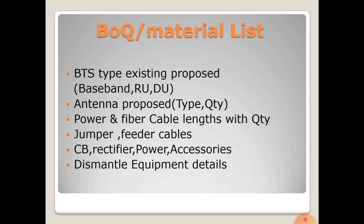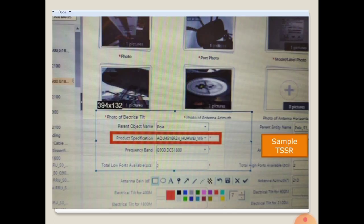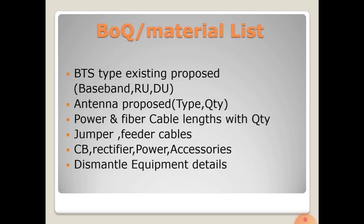From this we can know how many quantities of equipment with their lengths can be delivered to the site, which helps the SCM (supply chain management) team deliver the material. In a sample TSSR, you can see photos of antennas, antenna labels, electrical tilt, mechanical tilt, antenna type, frequency, number of ports, azimuth, and tilt — all covered for the existing cell site to enable feature cell site design. Notably, in India TSSR is not followed much, but most of the rest of the world uses TSSR for proper cell site delivery in the telecom domain.